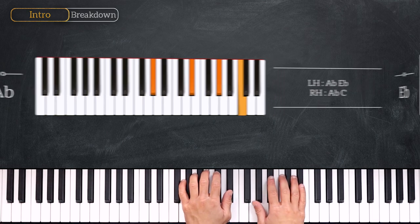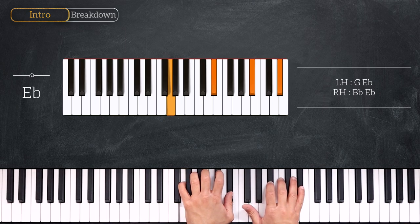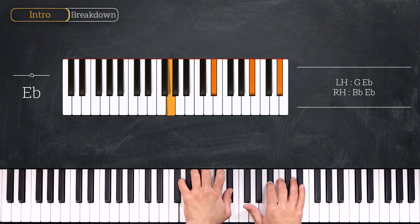Then we go to the fifth degree playing this Eb major chord. Playing Eb, Eb on the left and Bb, Eb on the right hand.